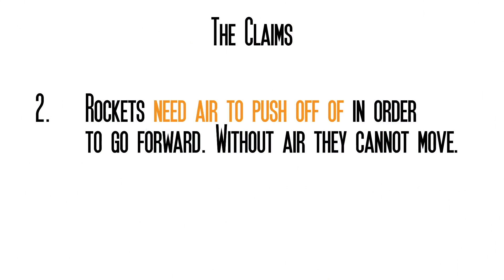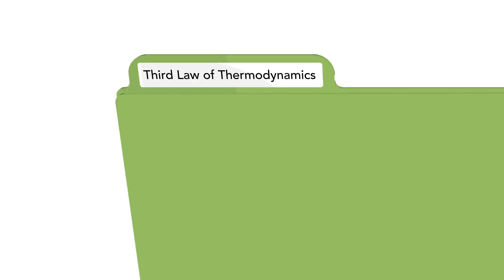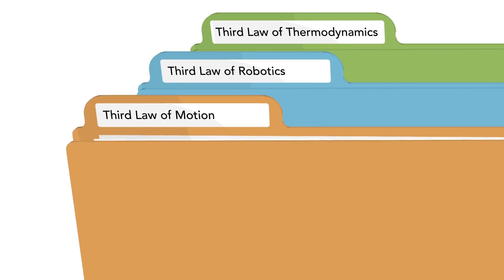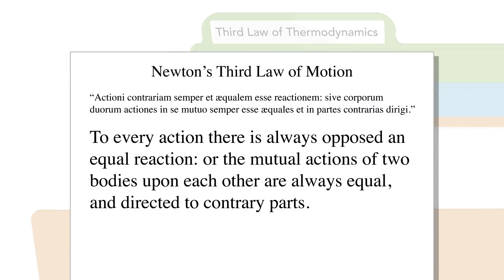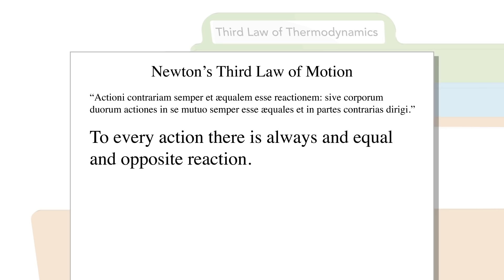The second claim is that rockets need a medium, like air, to push off of. This is due to the fact that rockets' movement is governed by Newton's third law of motion. Newton's third law of motion reads, to every action there is always opposed an equal reaction, or the mutual actions of two bodies upon each other are always equal and directed to contrary parts. Casually stated as, to every action there is an equal and opposite reaction.